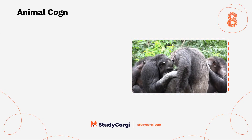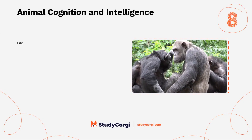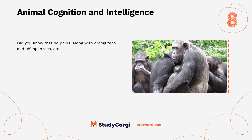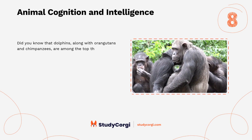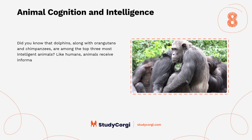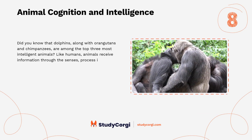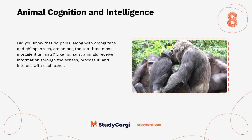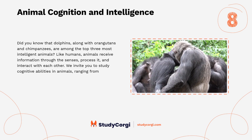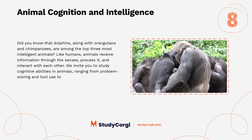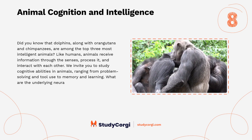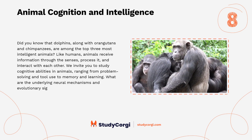Animal Cognition and Intelligence. Did you know that dolphins, along with orangutans and chimpanzees, are among the top three most intelligent animals? Like humans, animals receive information through the senses, process it, and interact with each other. We invite you to study cognitive abilities in animals, ranging from problem-solving and tool use to memory and learning. What are the underlying neural mechanisms and evolutionary significance of these abilities?